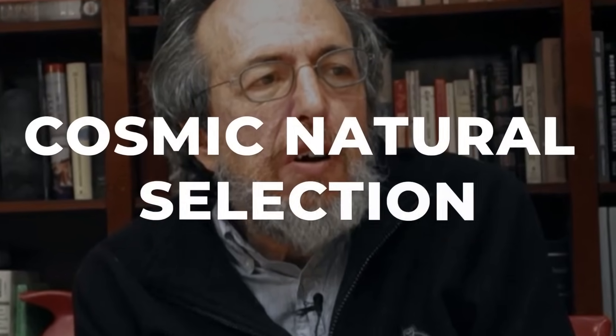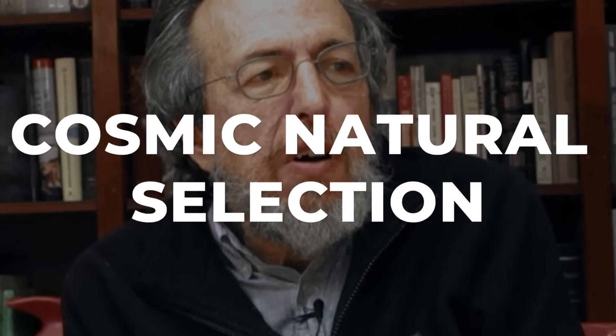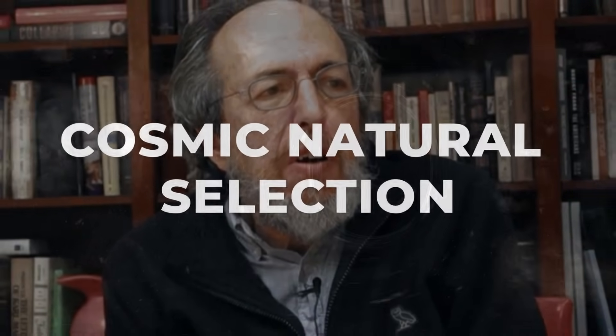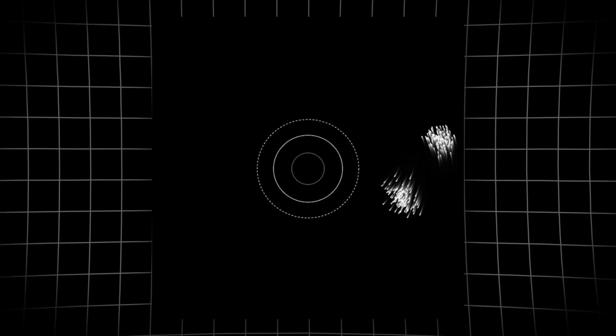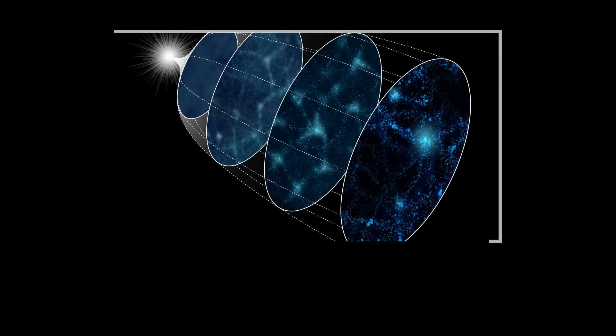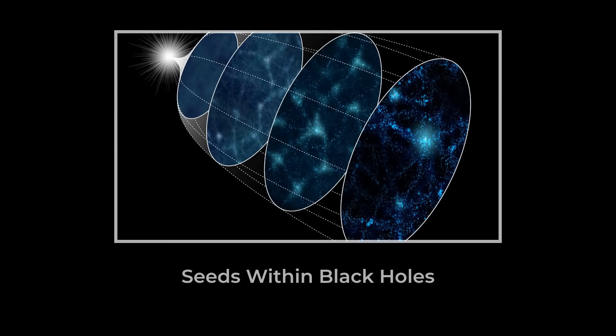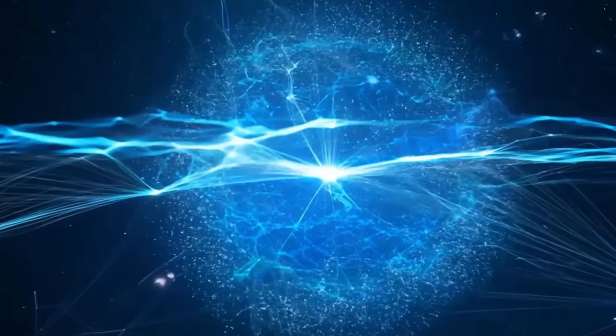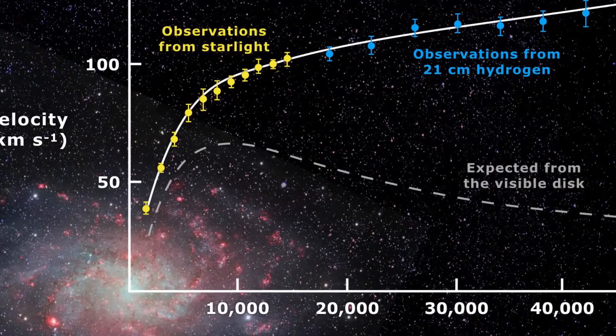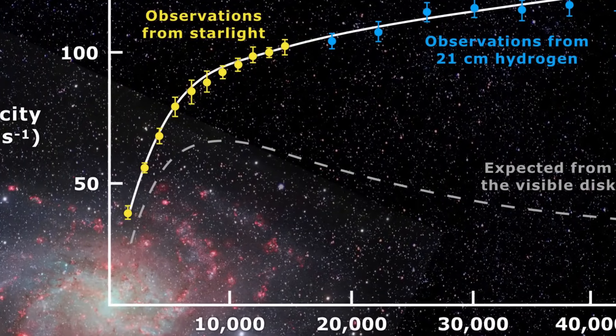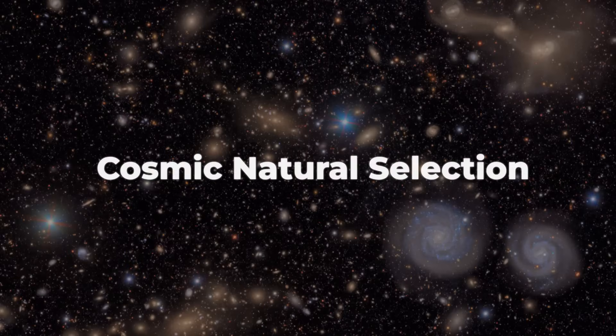Lee Smolin, a physicist known for thinking outside the box, once asked a question that flips the universe on its head. What if new universes are born inside black holes? In his view, black holes aren't just endpoints for matter – they're cosmic cradles. Every time a massive star collapses, it might not just vanish from our universe, but instead spark the birth of a new one, sealed off behind its own horizon. Each newborn universe could inherit traits from its parent, like mass, spin, and even the physical constants that shape its evolution. This idea is called cosmic natural selection.